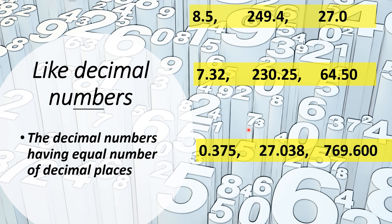Let's see another example: 0.375 — three decimal places; 27.038 — again three decimal places; 769.600 — three decimal places. So all these examples are like decimal numbers.